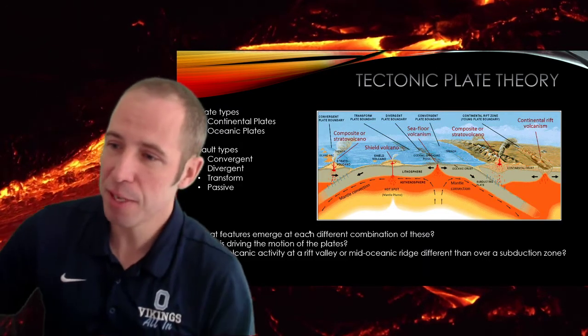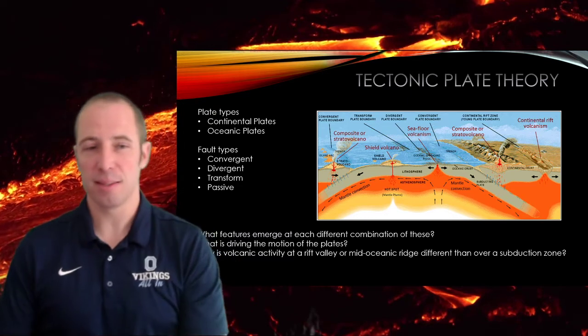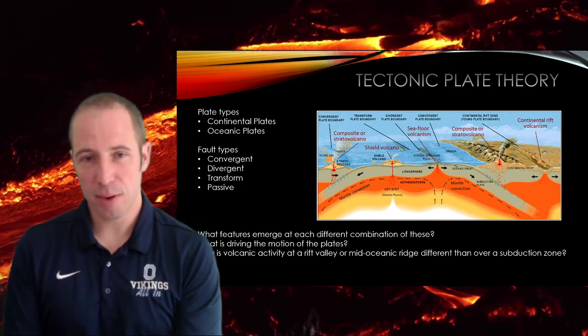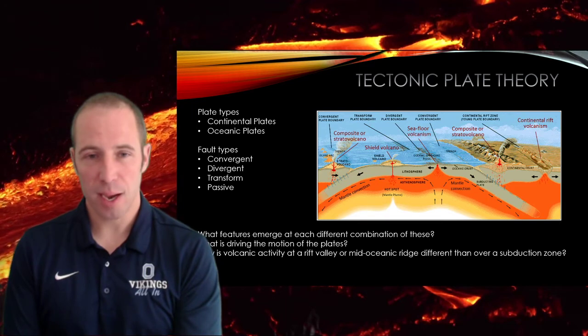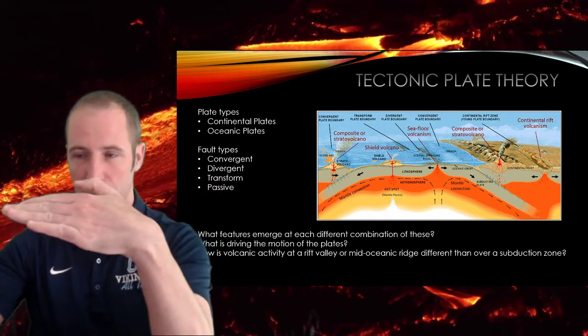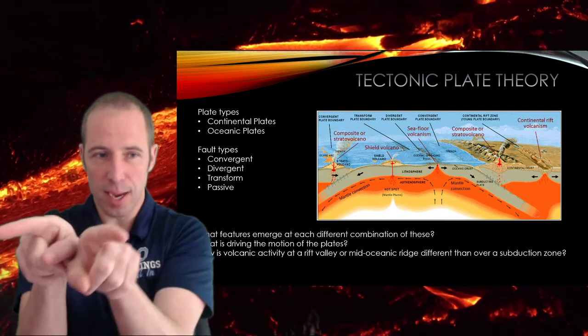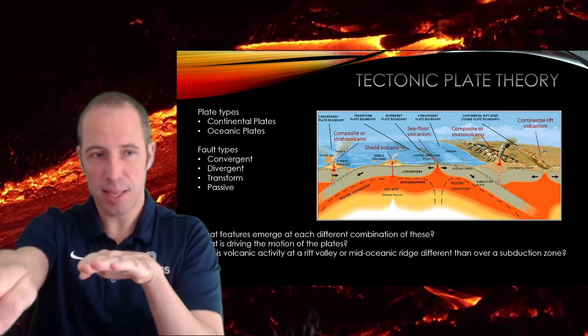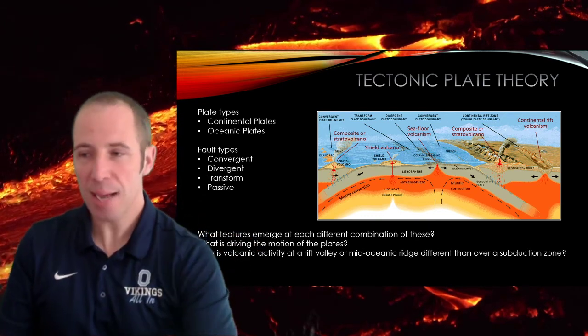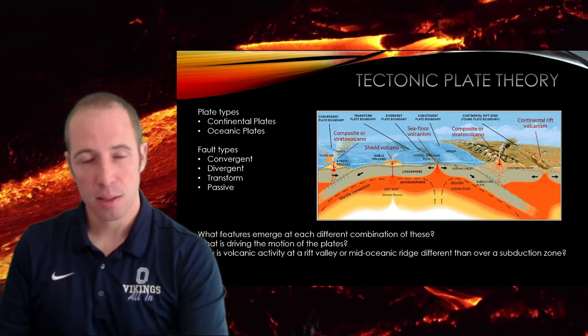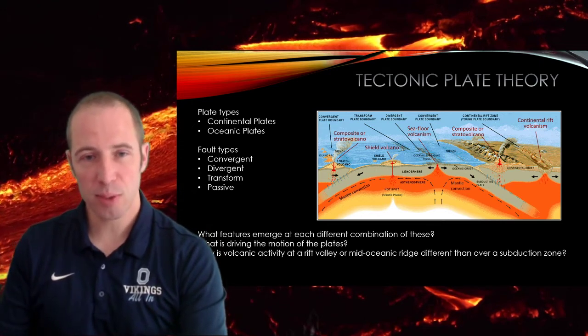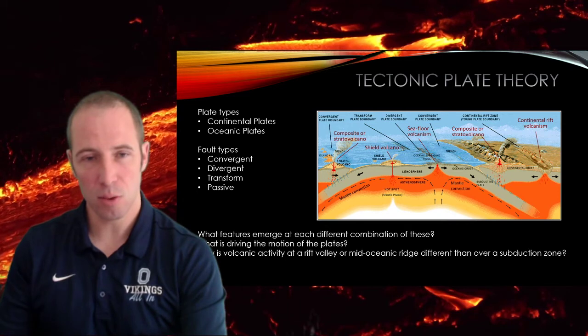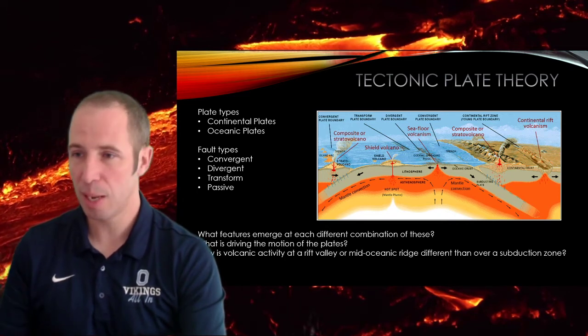All right. Now we're looking at features between different kinds of plates. So one thing we want to talk about is, well, what kind of faults are there in general? So we've got convergent. Convergent means coming together. We've got divergent, which means separating apart. We've got transform, which means sliding past each other. And then we've got passive, which means not moving at all. Beyond those four categories, we can also look at whether it's a continental or oceanic or some combination of both types of plates involved.